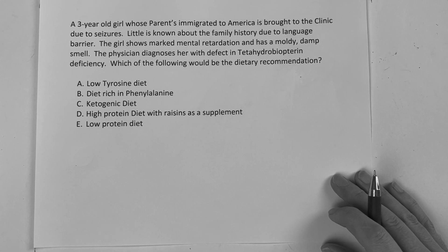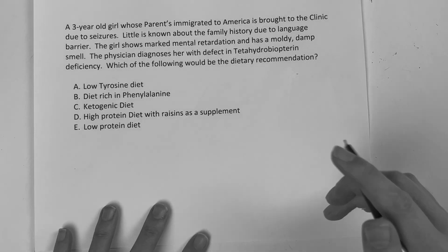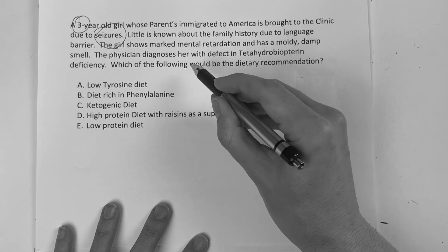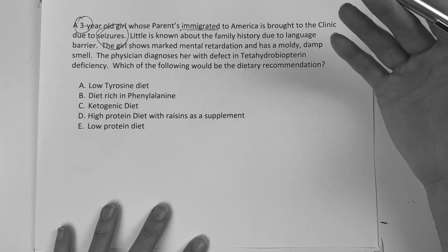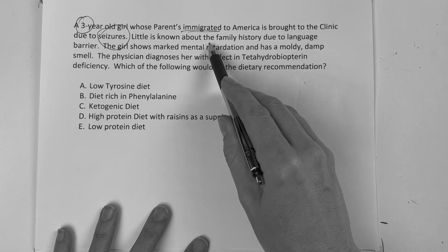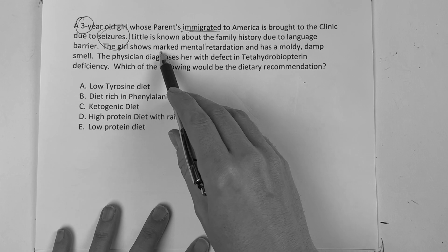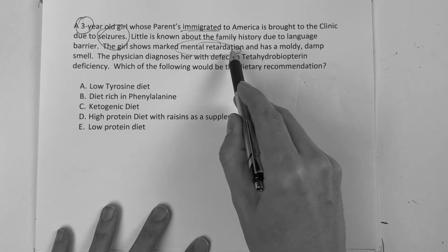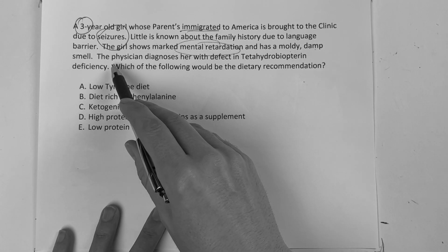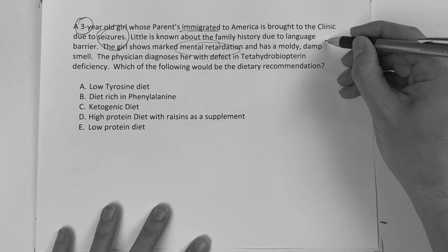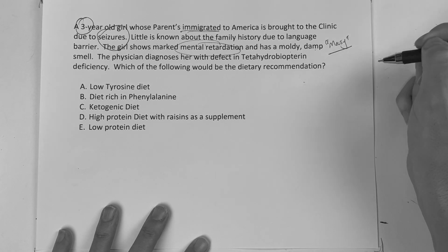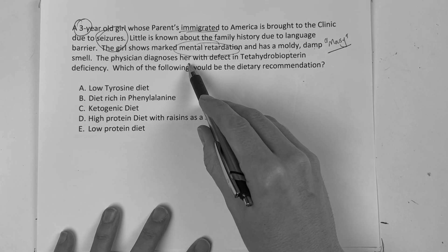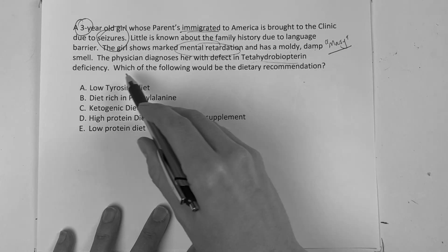A 3-year-old girl whose parents immigrated to America is brought to the clinic due to seizures. Chances are there was no screening test done. Little is known about the family history due to a language barrier. The girl shows marked mental retardation and has a moldy, damp smell. The physician diagnoses her with tetrahydrobiopterin deficiency — that's our mousie smell, classic PKU.